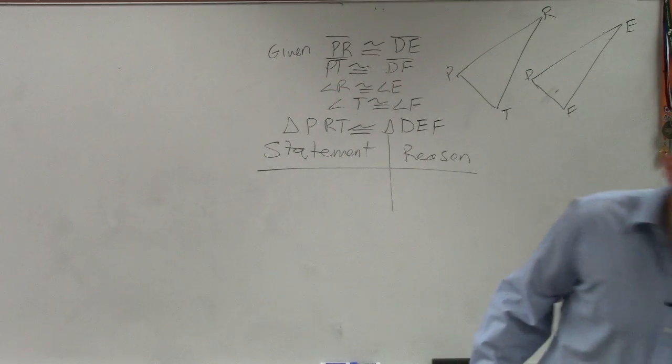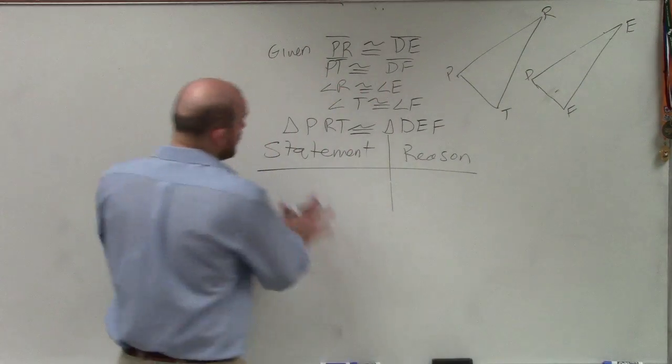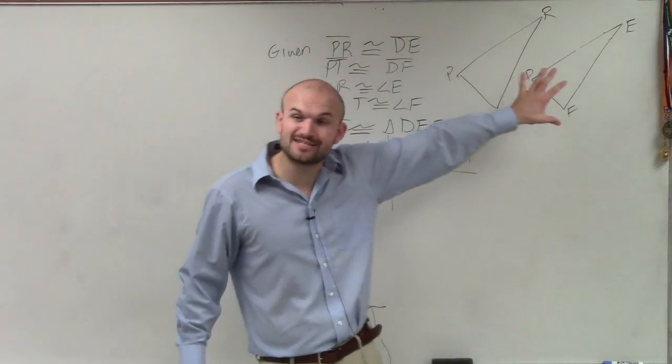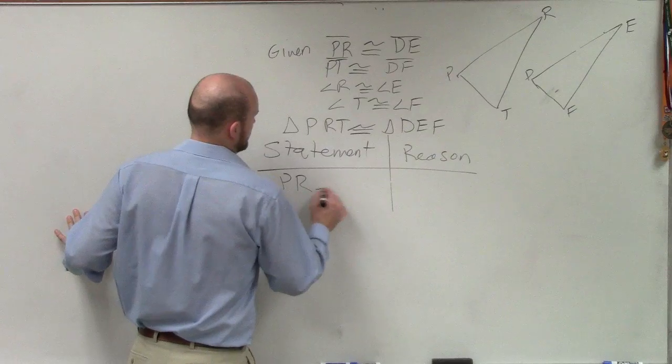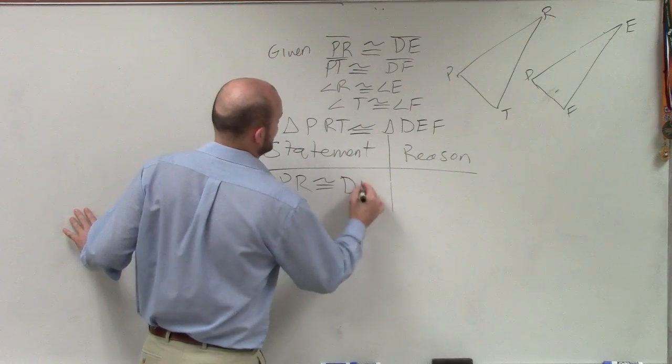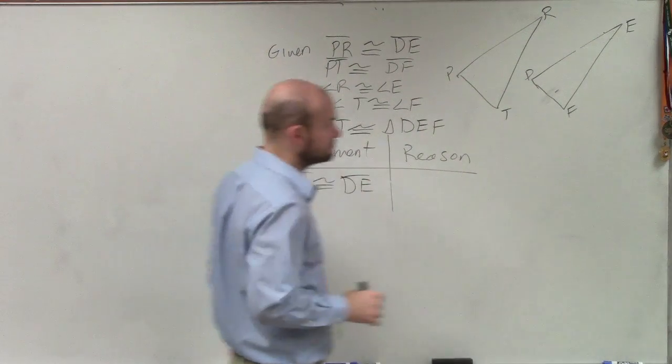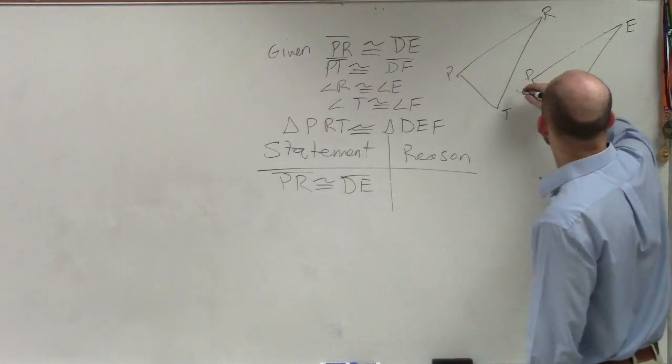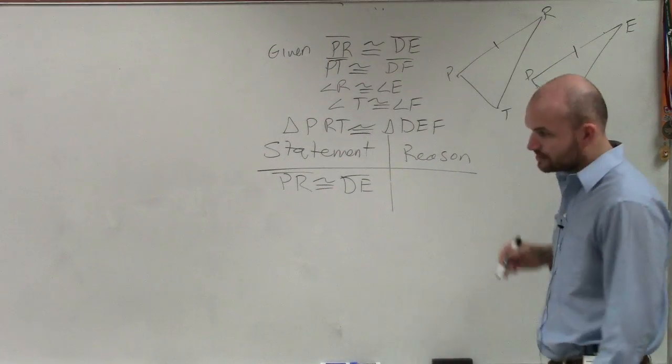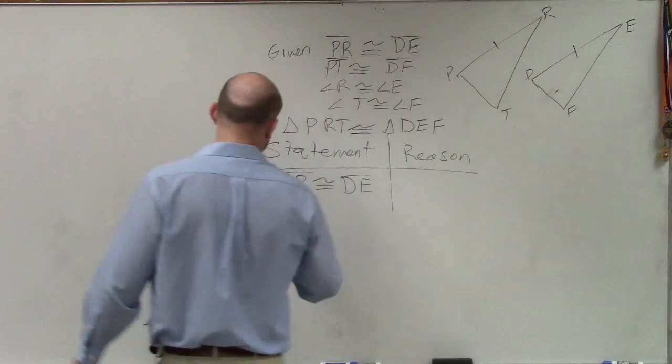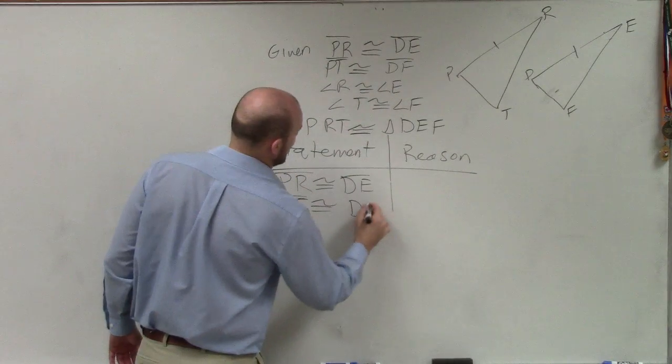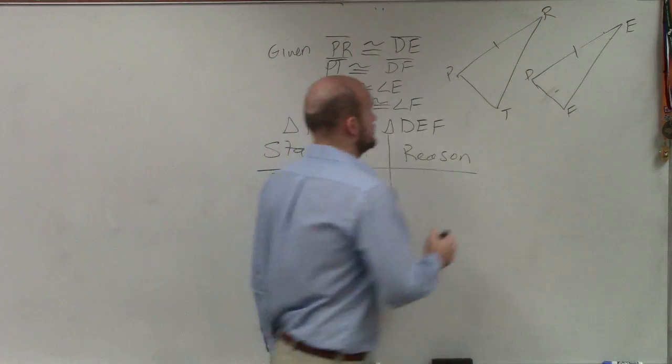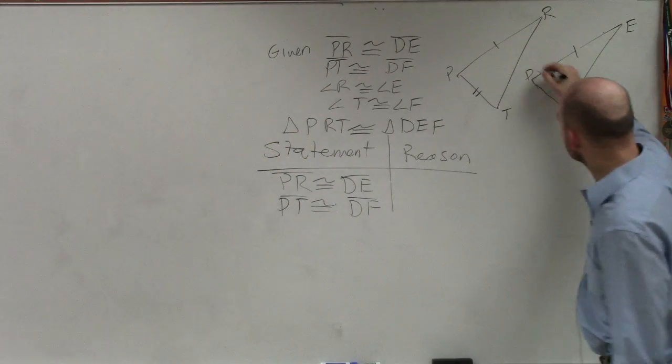So the first thing, ladies and gentlemen, and the easiest thing to do is write down the givens. But once you write down the givens, make sure it's reflected in the picture. So my first given is PR is congruent to DE. I'm going to put a tick mark there for each one. Then I have PT is congruent to DF.